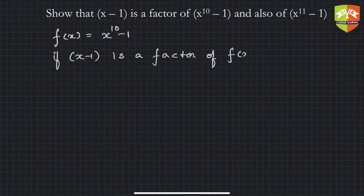f(1) must be 0. That is by factor theorem, right? The value of the function or the polynomial in this case at x equals 1 must be 0. So let's check whether it is actually 0.